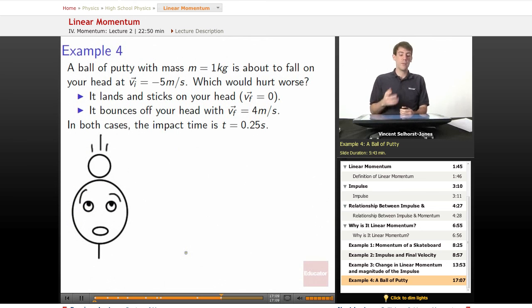Last example: a ball of putty with a mass of 1 kg is about to fall on your head at velocity initial equal to negative 5 m per second. Makes sense, it's falling down. So which one's going to hurt worse?